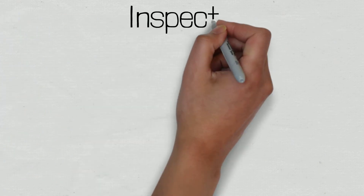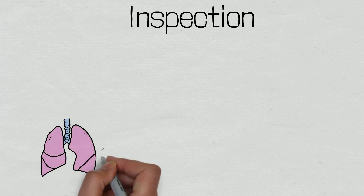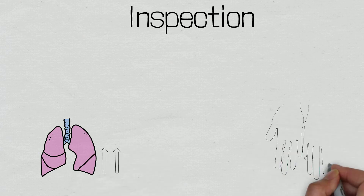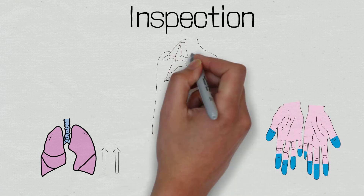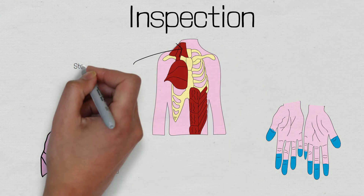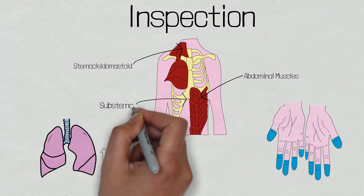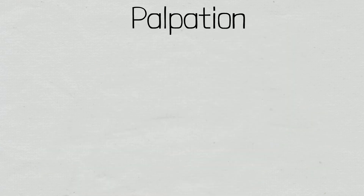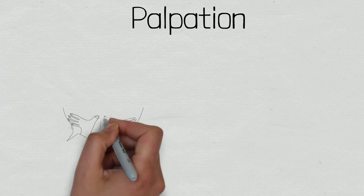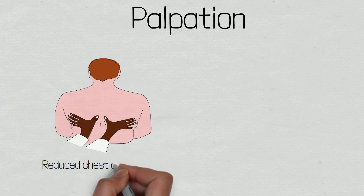Starting with an inspection, you may notice an increased respiratory rate, cyanosis, use of accessory muscles to assist with breathing such as the sternocleidomastoid muscle and the abdominal muscles, and you may also notice substernal and supraclavicular recession. When palpating the thoracic cavity, you may notice that there is an unequal expansion of the chest wall as the patient breathes in and out. This is because the area of consolidation has reduced ventilation and therefore will not fill with air and expand.